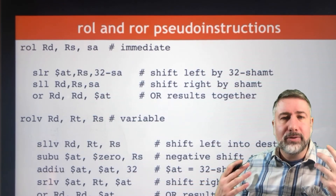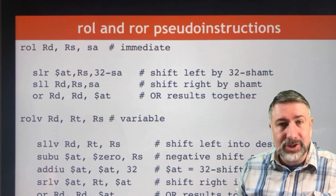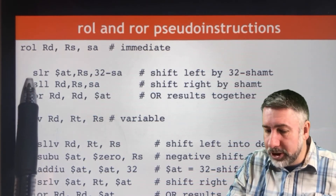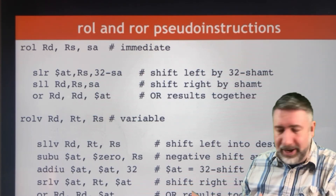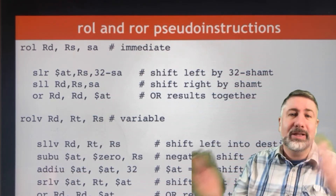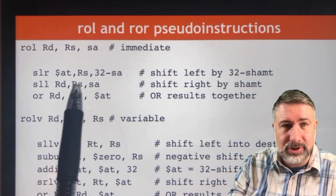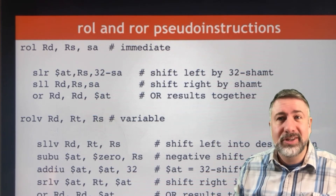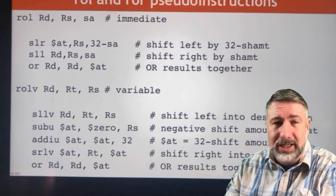Looking at the pseudo-instruction implementation: for a regular rotate with an immediate shift amount, the assembler produces these instructions easily. We shift right by 32 minus the shift amount — that makes the bottom half — and we shift left by the original shift amount — that makes the top half. We need another place to store them: the assembler temporary register stores one part, the destination register stores the other part, and then we OR them together into the destination register.